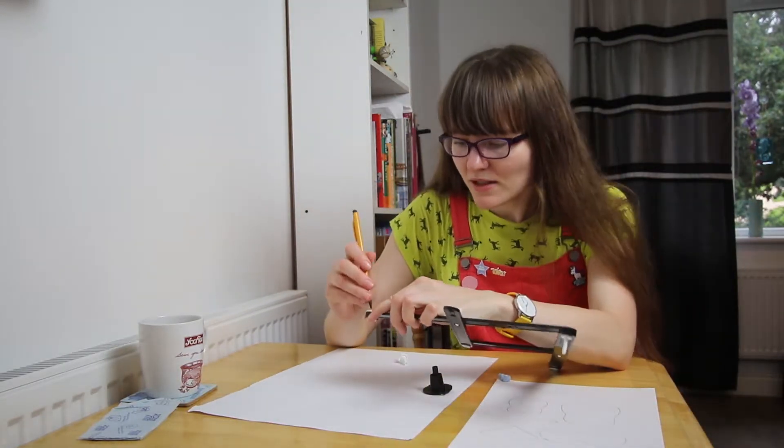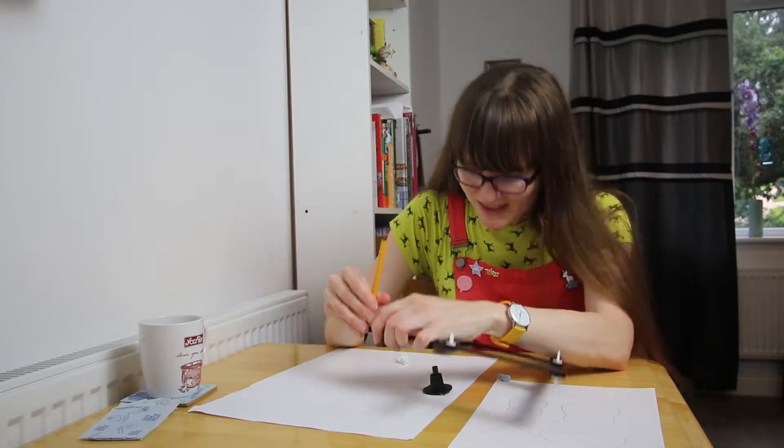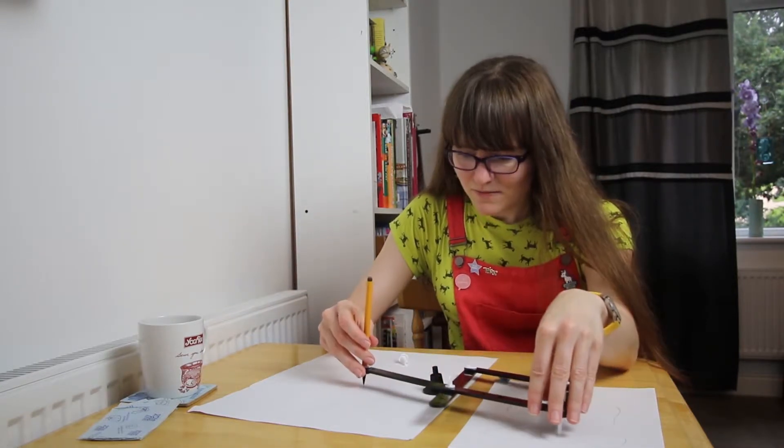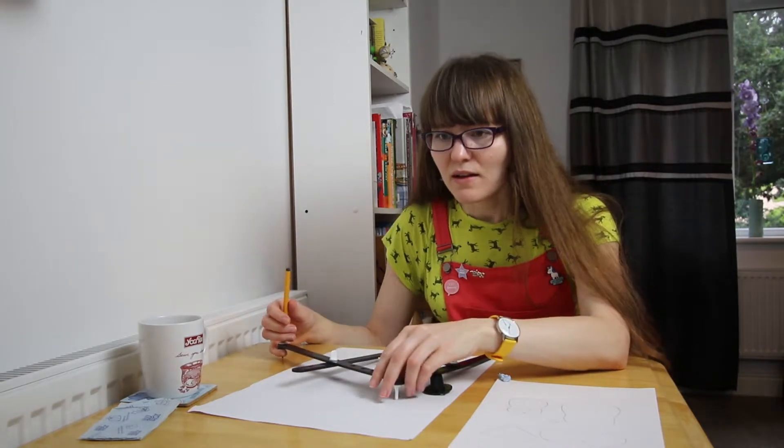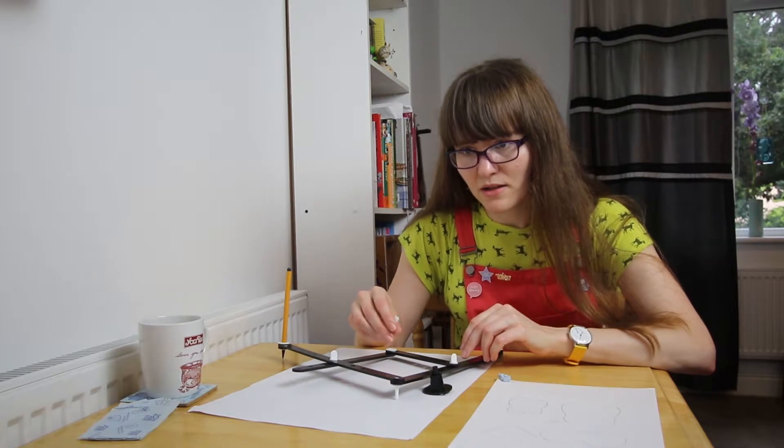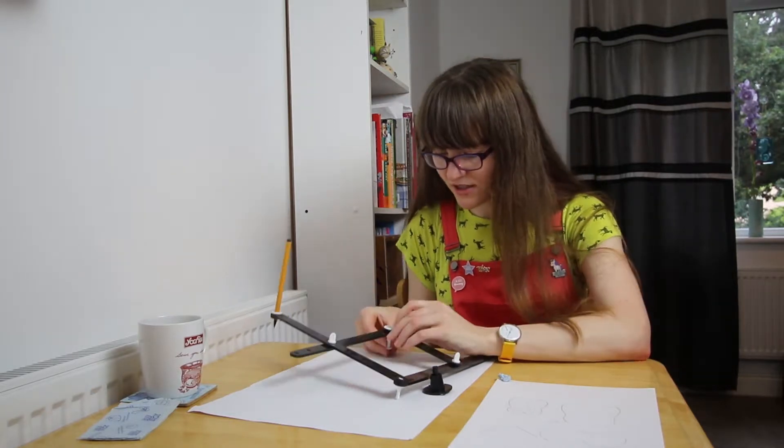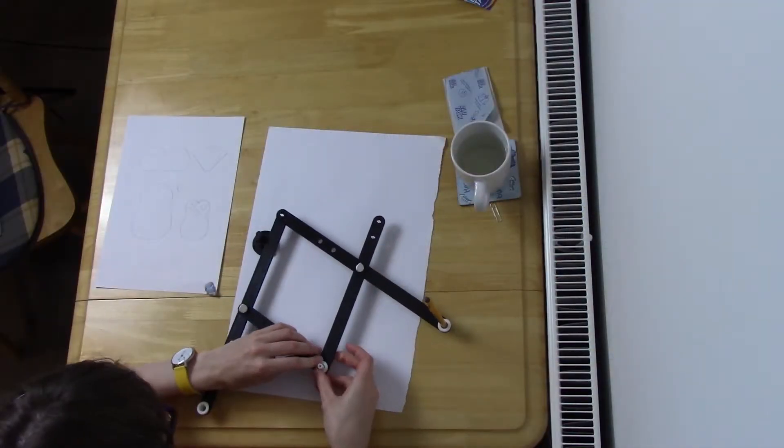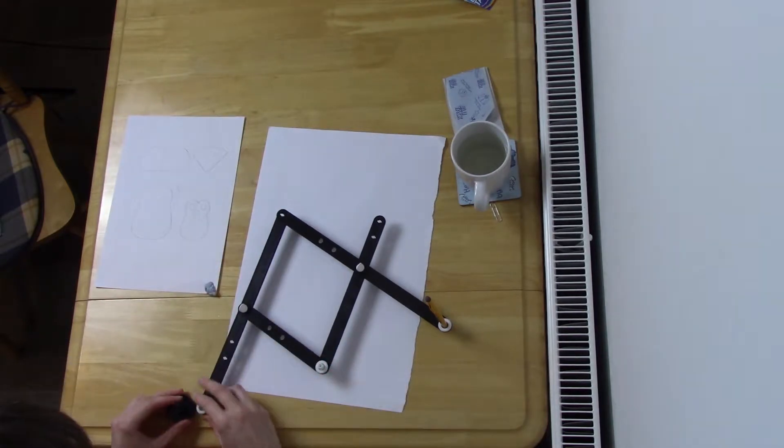like so. Then the tracing pointer goes into B which is this middle one and the pivot's in A.